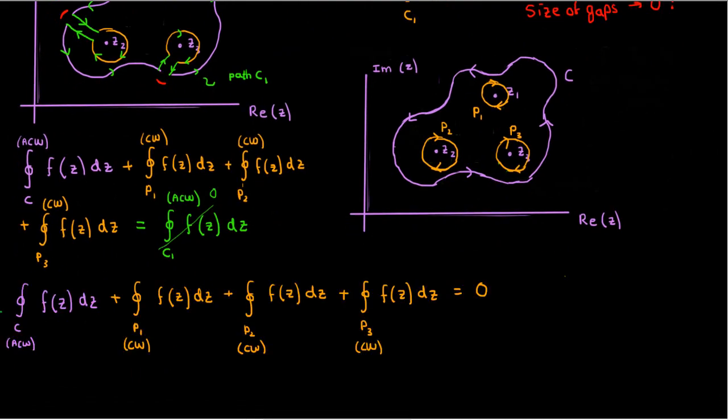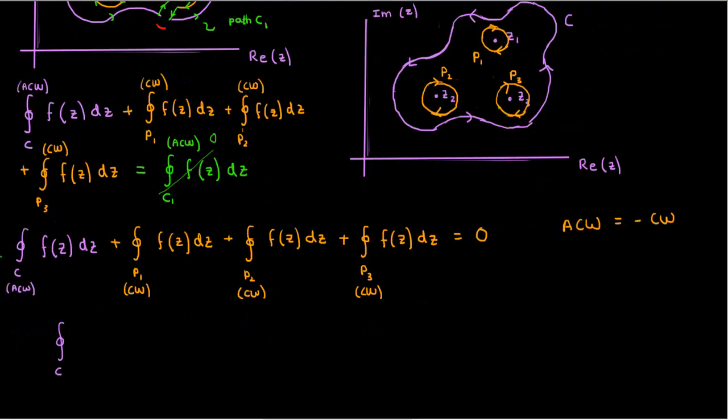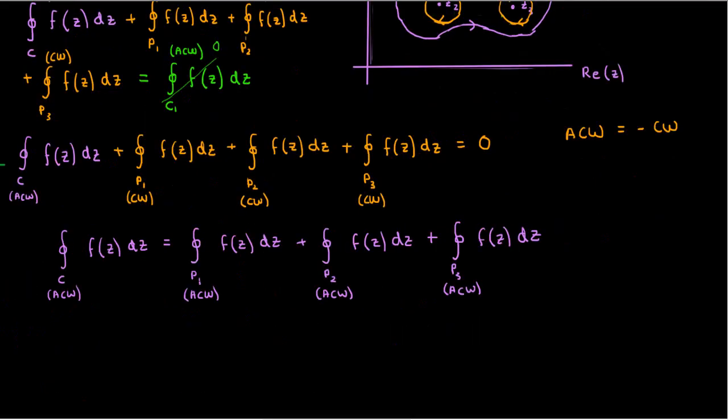I can now isolate the integral around the entire curve c and use the fact that the clockwise integrals are just the negatives of the anti-clockwise integrals to show that the integral of a complex function over a contour c is only due to the contributions of the singular points inside that contour.